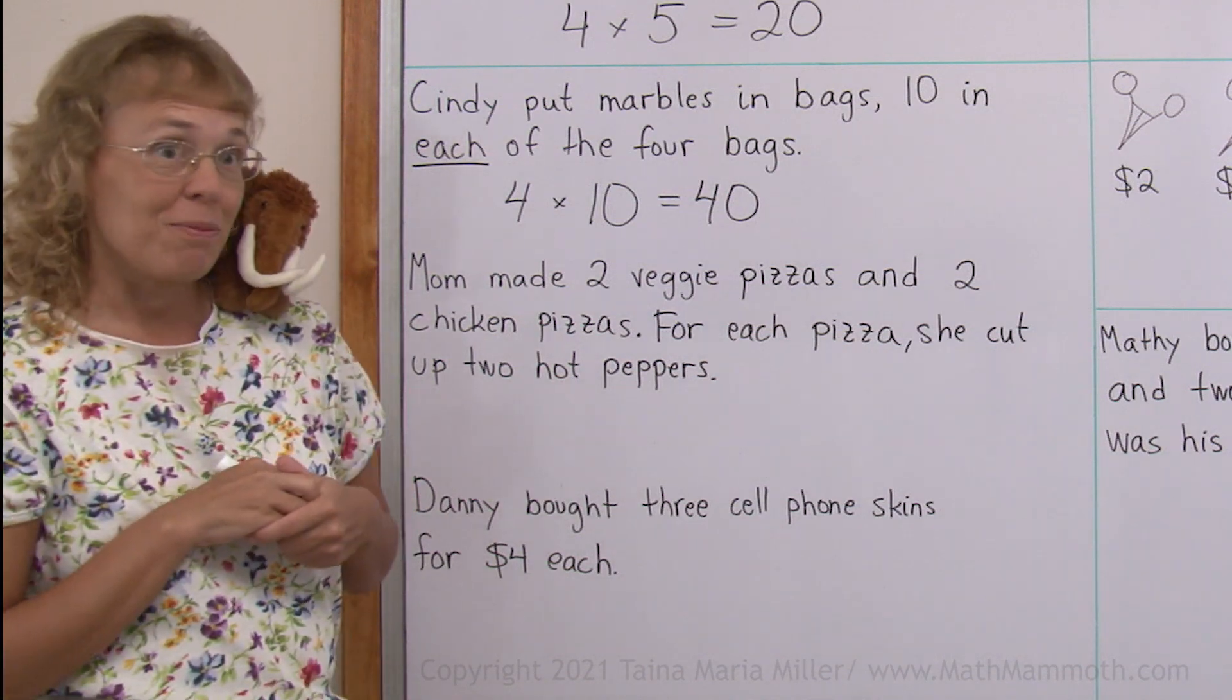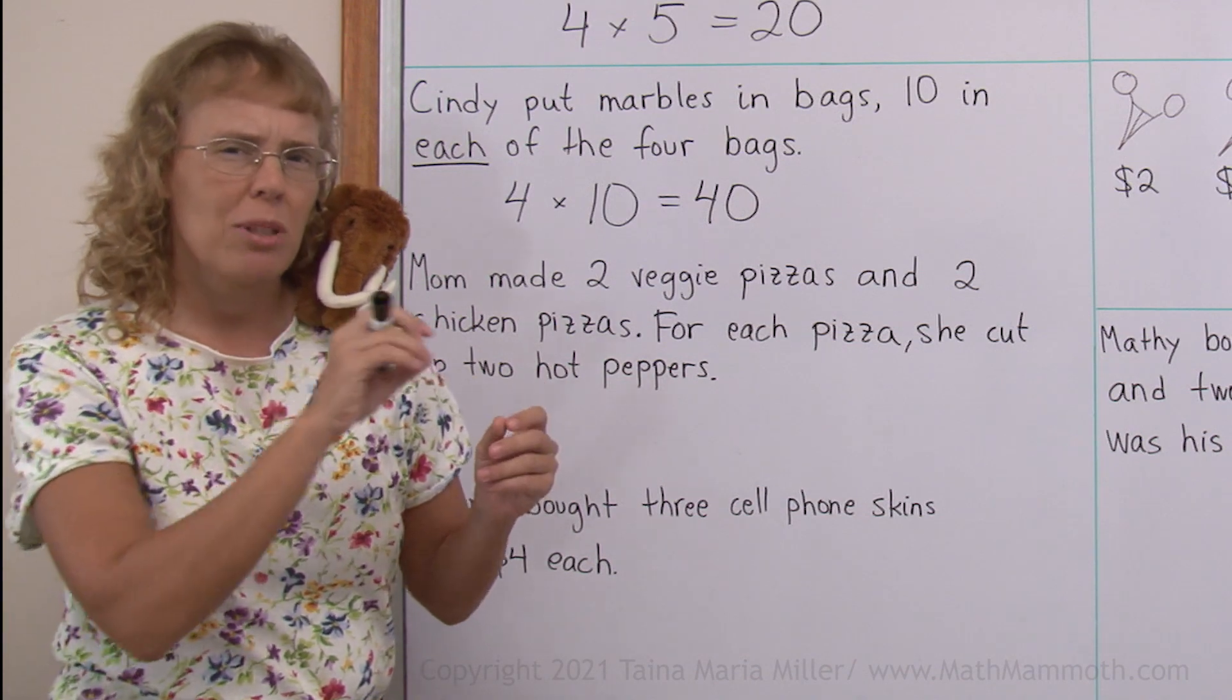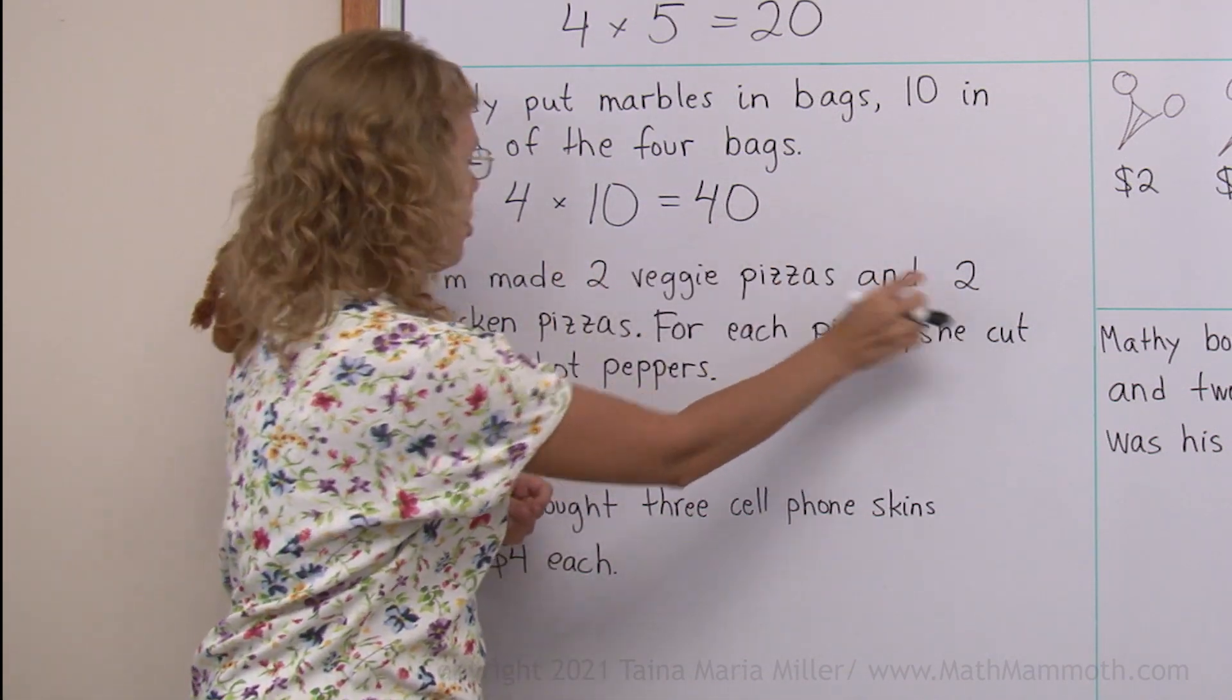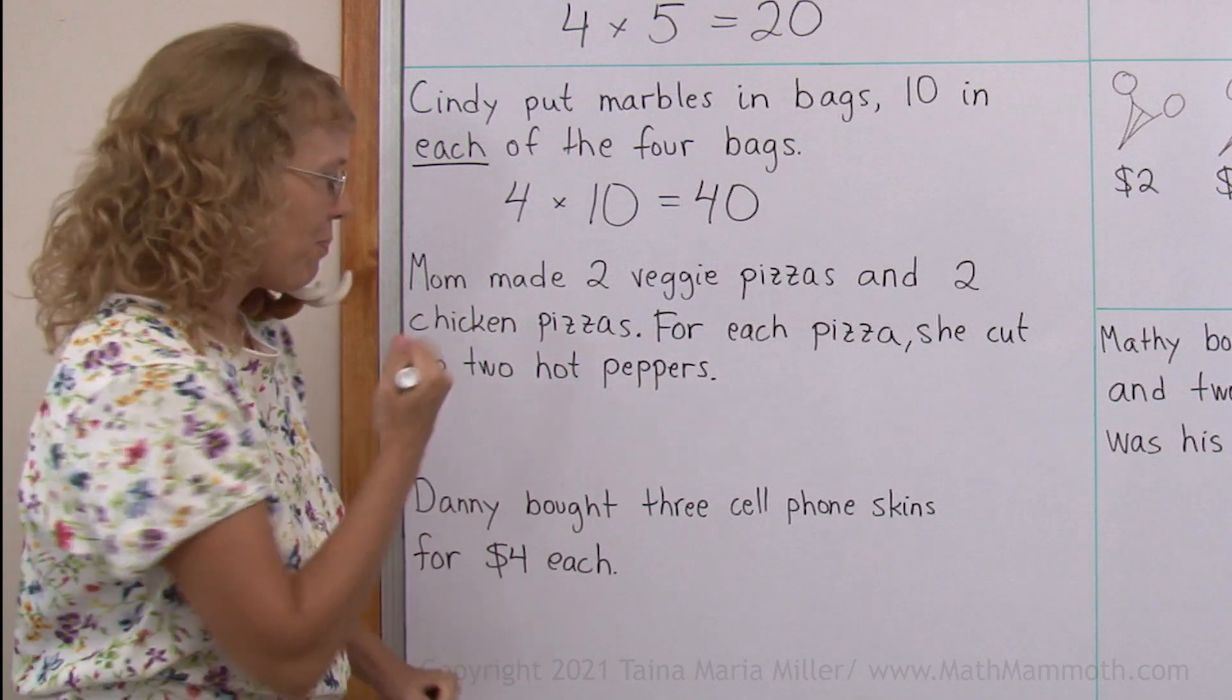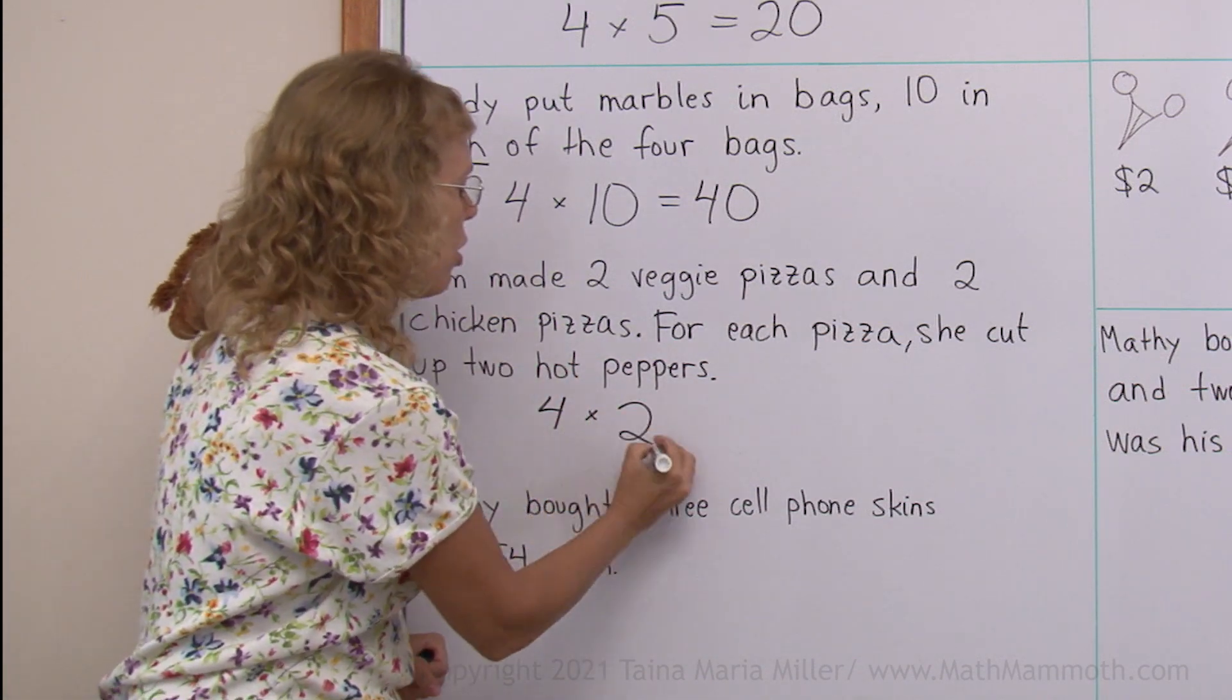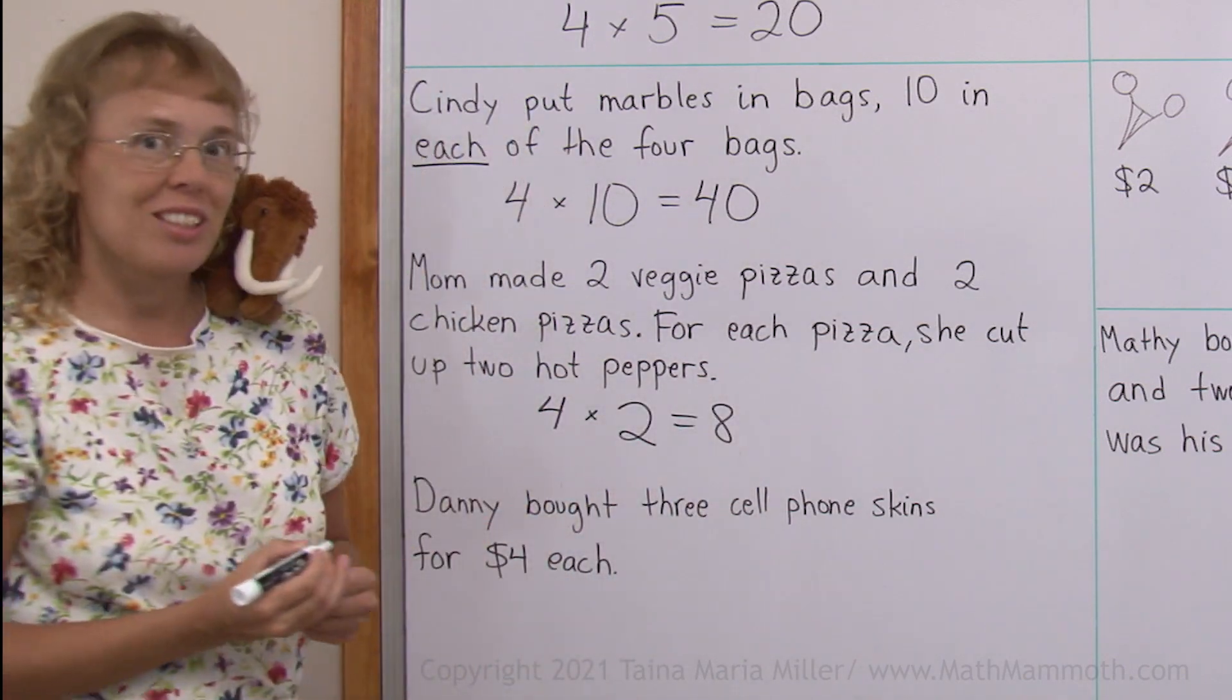We're going to use multiplication because there are how many pizzas and how many hot peppers in each? There are two veggie pizzas, two chicken pizzas. So four pizzas and two hot peppers in each. That's the word each again. Four pizzas and two hot peppers in each of the pizzas. So we get eight hot peppers in total.